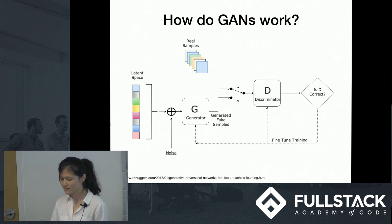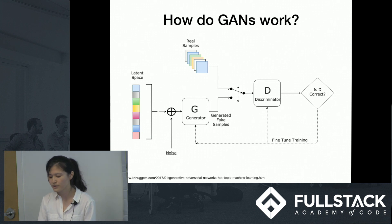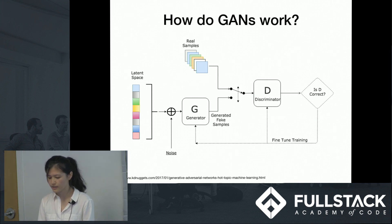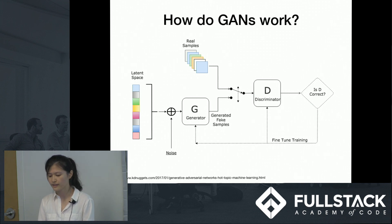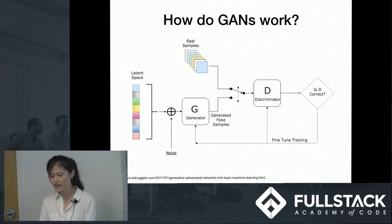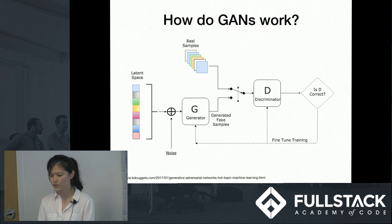If the discriminator's prediction is incorrect, it tries to learn from its mistakes to avoid similar mistakes in the future. In other words, these two models play a continuous game, where the generator is learning to produce more and more realistic samples, and the discriminator is learning to get better and better at distinguishing generated data from real data.